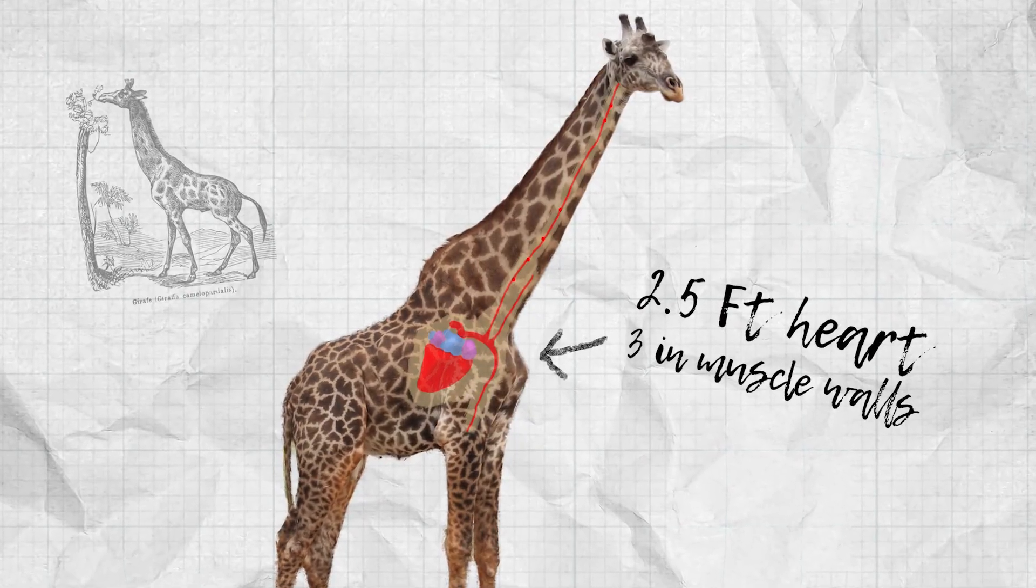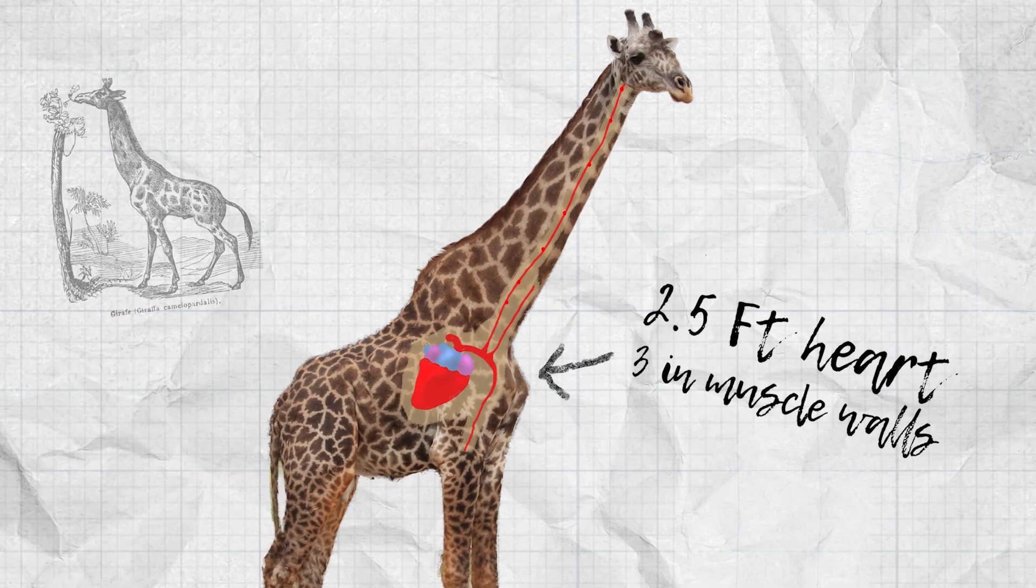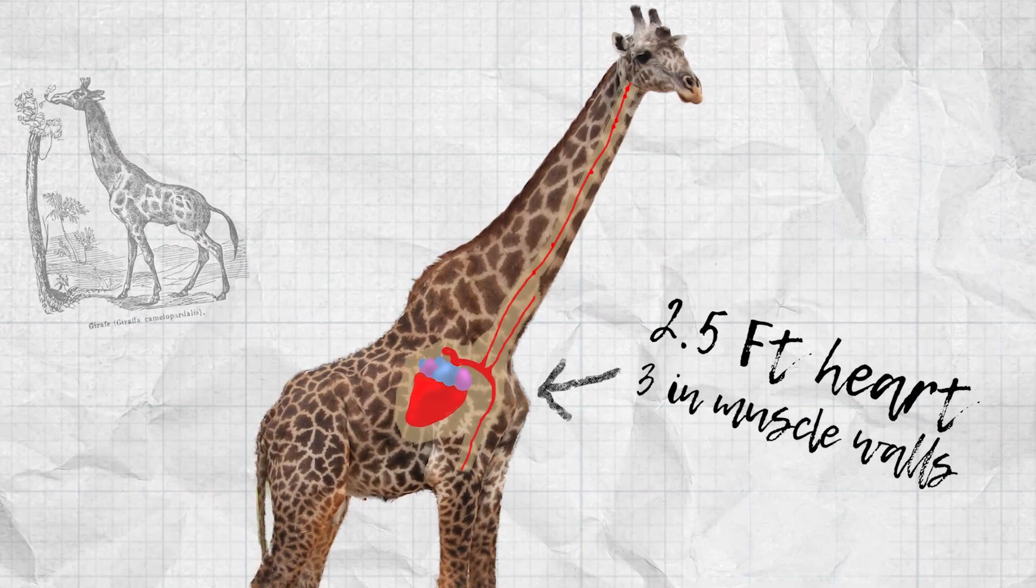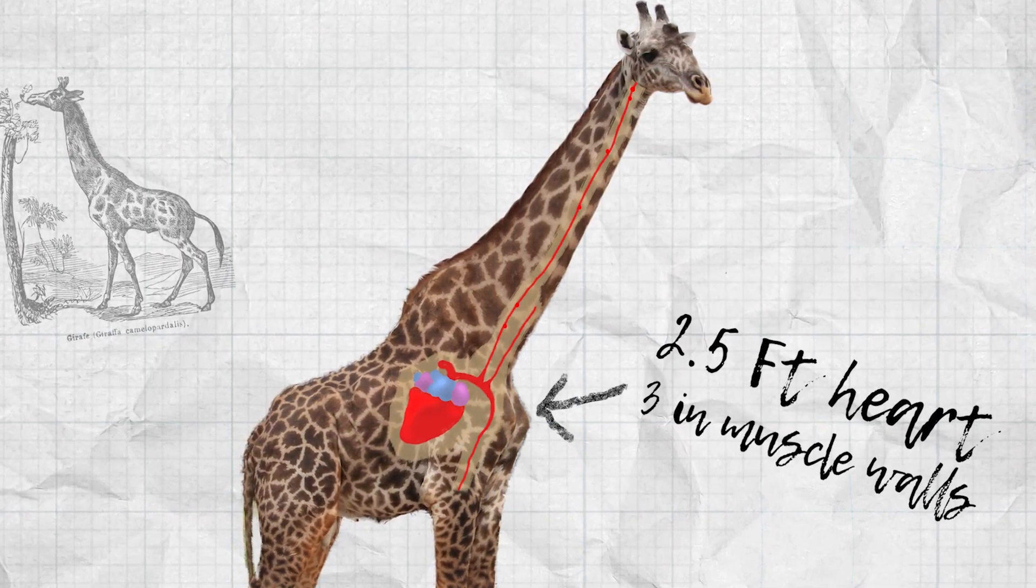Well because of gravity when we bend over for a couple of minutes the blood rushes to our head and we get a headache. An adult bull giraffe can have a two and a half foot long heart with three inch thick muscle walls to pump that blood 18 feet into the air.